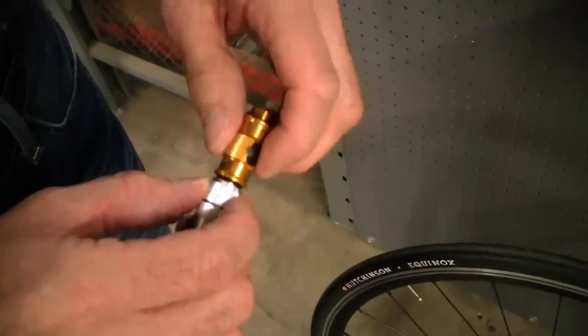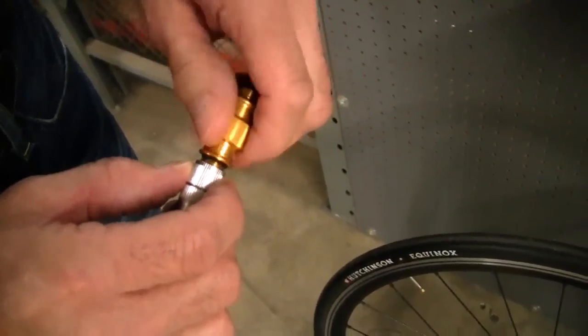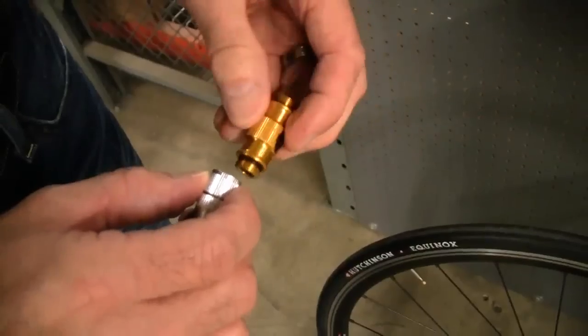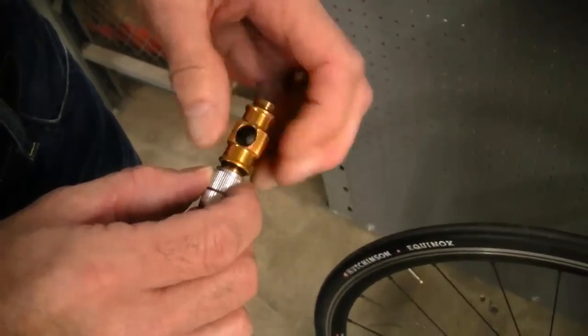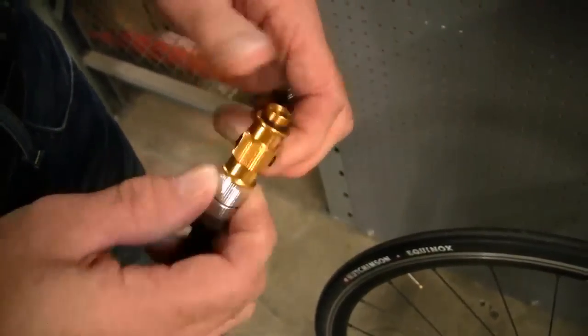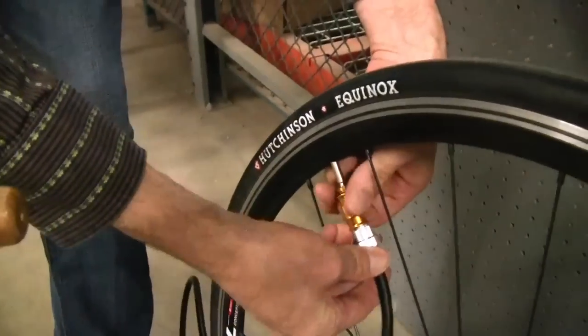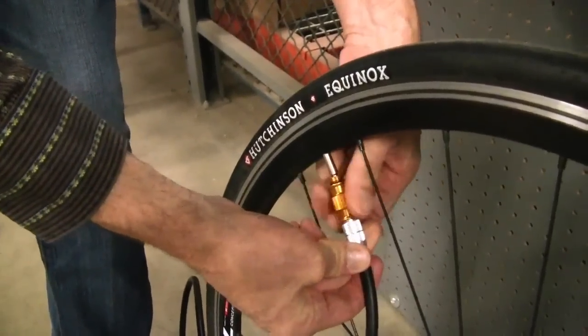We get to the guts at the top here and this is the really neat part. Works with both Presta and Schrader valves. Just unthread here and then flip it over. Thread it on the other side so you go from Presta to Schrader. You can thread it onto your valve stem.